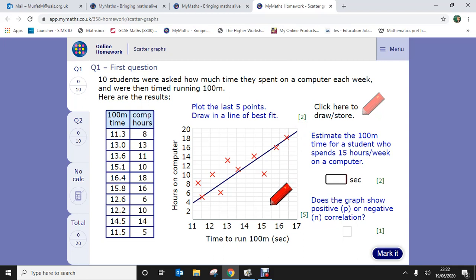Okay, and then estimate the 100 meter time for a student who spent 15 hours a week on a computer. So 15 hours on a computer, we would follow the line of 15 just about here across. And then we're going to come down, so 15.5 would be just above, so we're going to go 15.3 somewhere there. So we'll say 15.3.